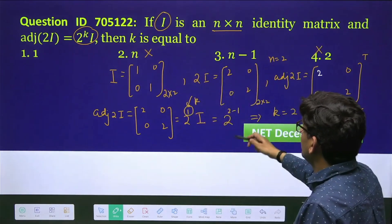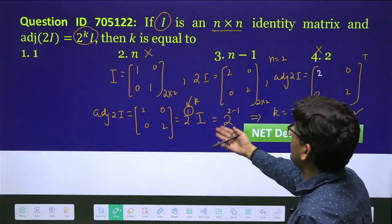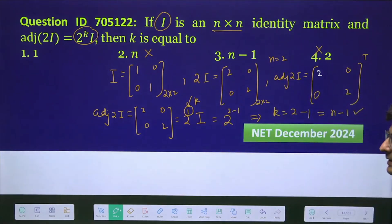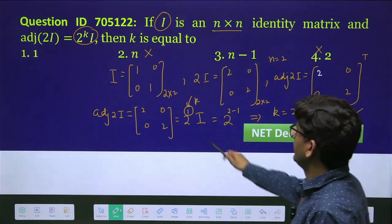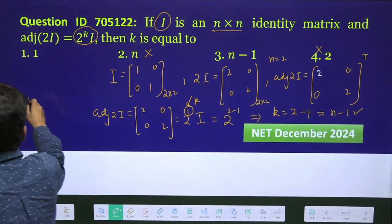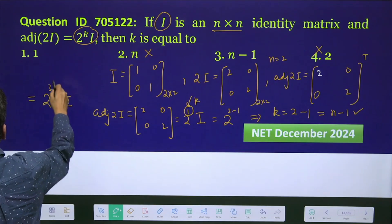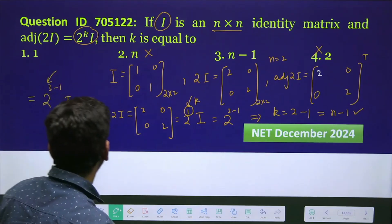But that is only for 2×2 matrix. So if you take 3×3 matrix, you can check it will become 3, right? So that will become 3-1. So we will get here for 3×3, we will get 2^(3-1)·I, where n=3.